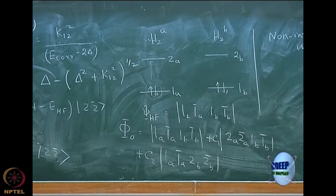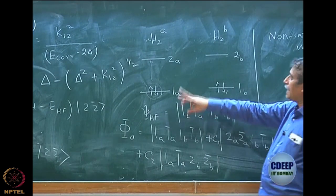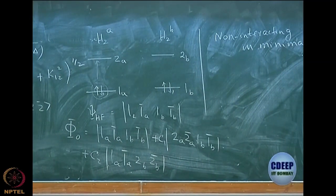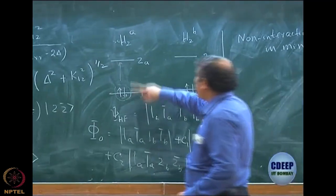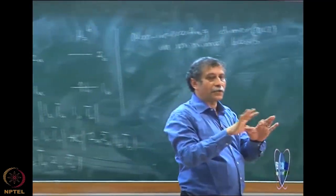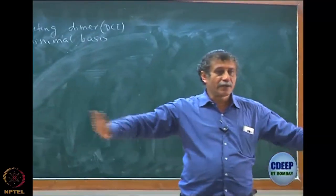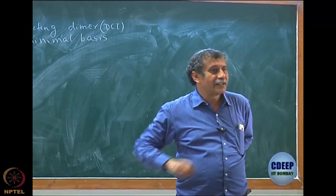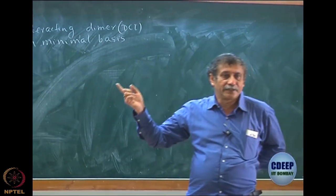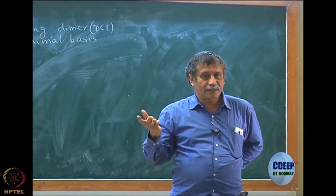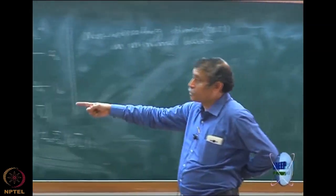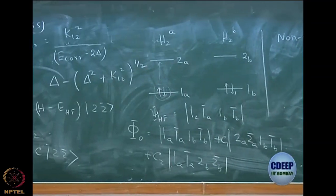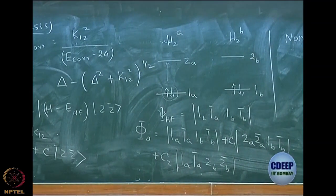These are the only two doubly excited configurations that are possible, because anything else would include excitation from both monomers. There is a possibility of one here and one there, but we are talking about a wave function which is totally singlet. That is the reason we are eliminating that, since we are doing DCI anyway.